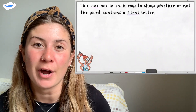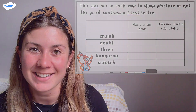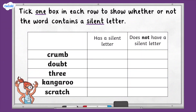For the next question, you're being asked to tick the correct box in each row to say whether or not the word contains a silent letter. Try reading each word out loud and listening for the sounds that each letter makes. If the word contains a letter that doesn't make a sound, it has a silent letter. If you'd like time to answer the question, pause the video now and then hit play again when you're ready to hear the answers.